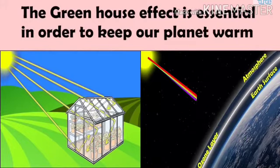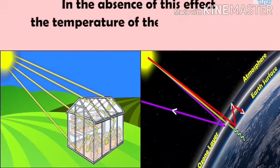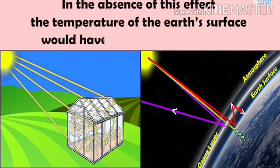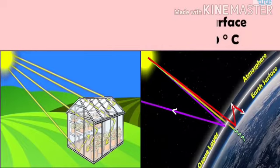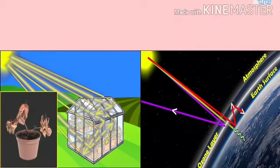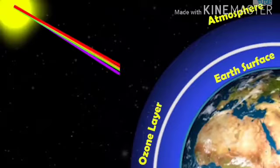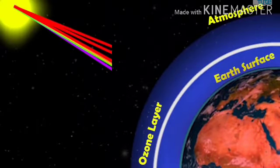The greenhouse effect is essential in order to keep a planet warm. In the absence of this effect, the temperature of the earth's surface would have been minus 20 degrees Celsius to minus 40 degrees Celsius. But receiving excess heat is also dangerous to the earth.